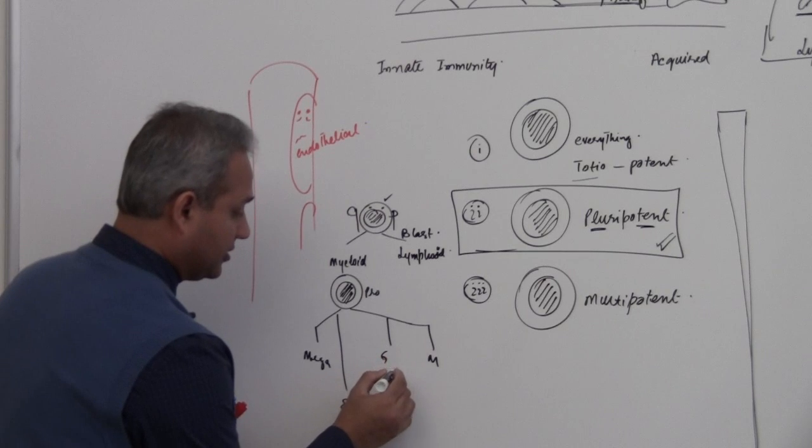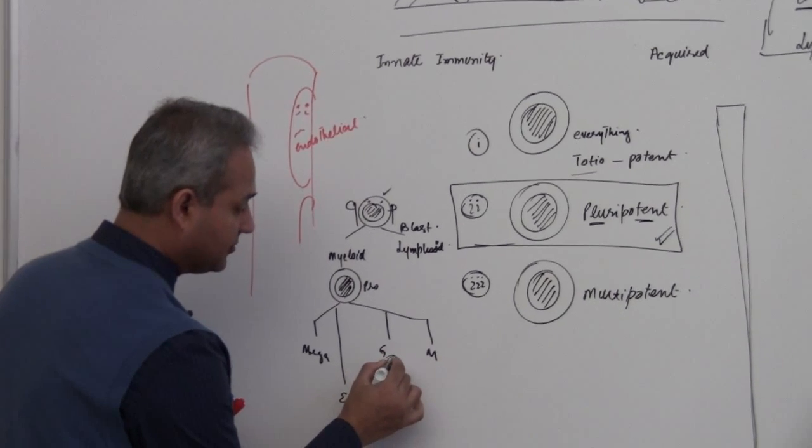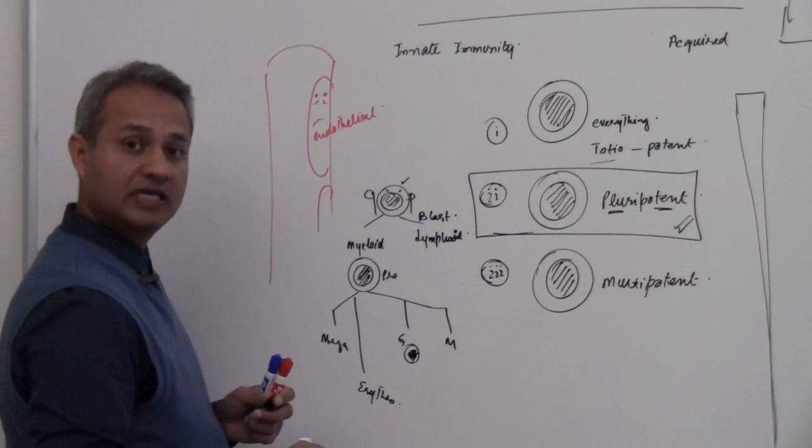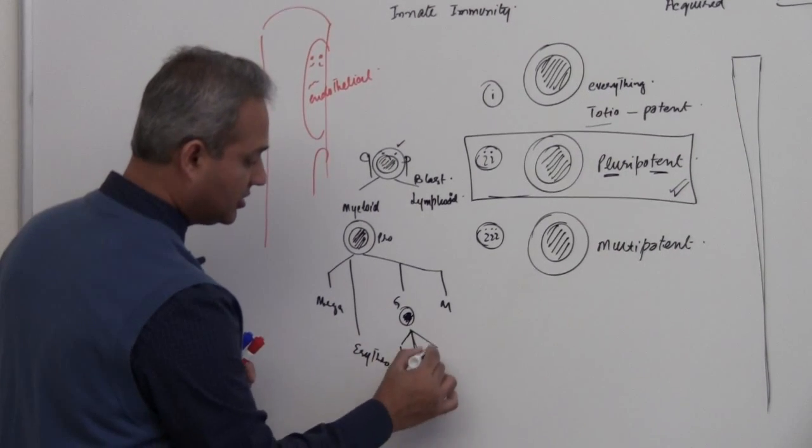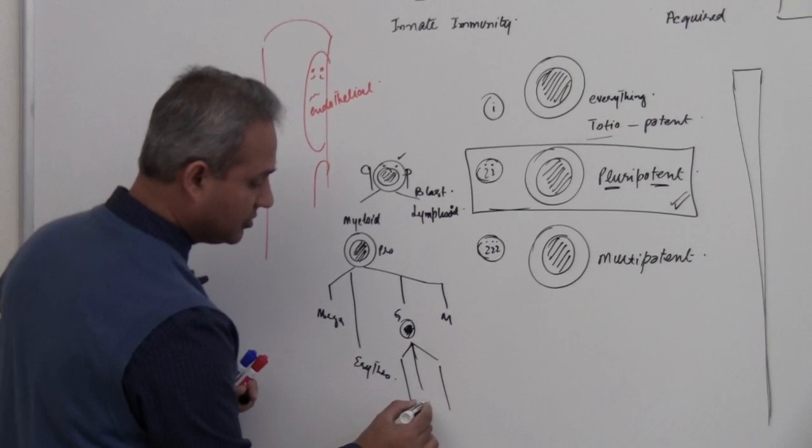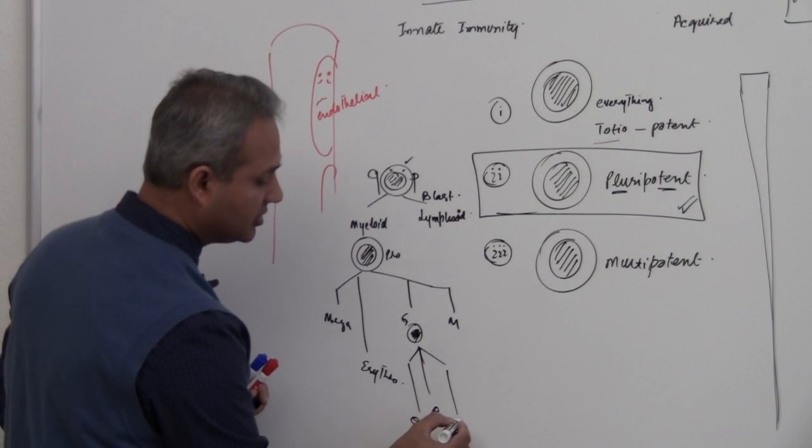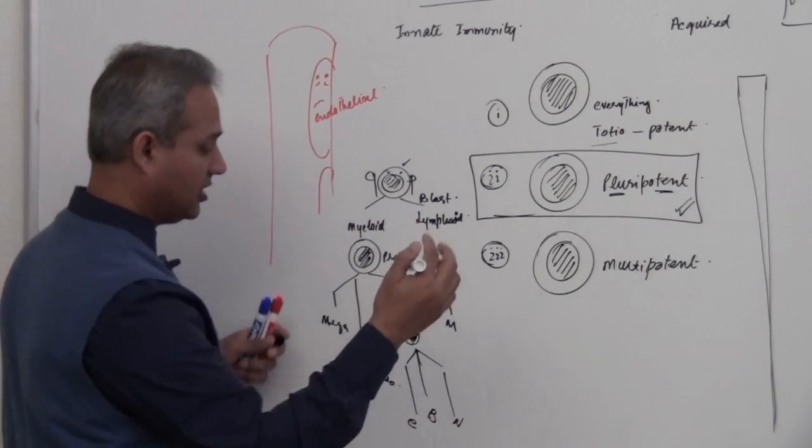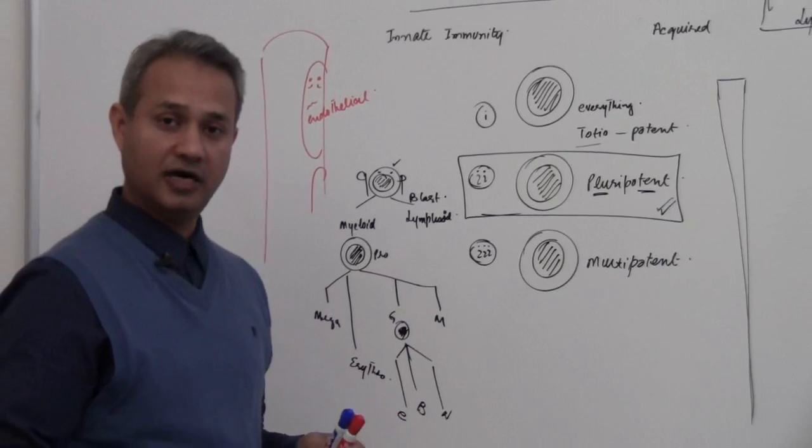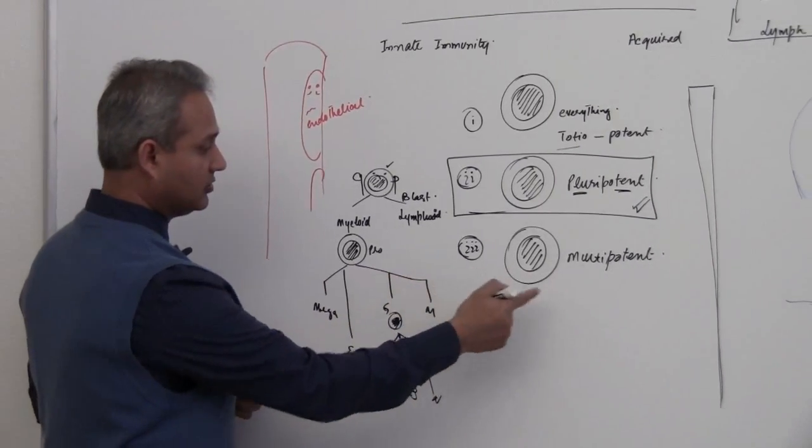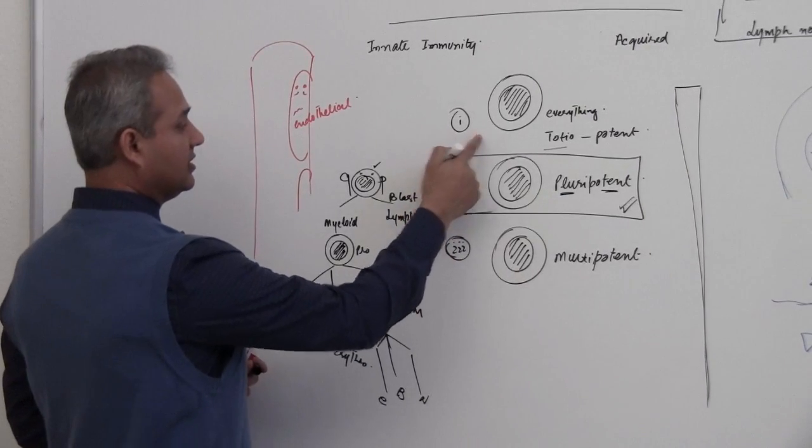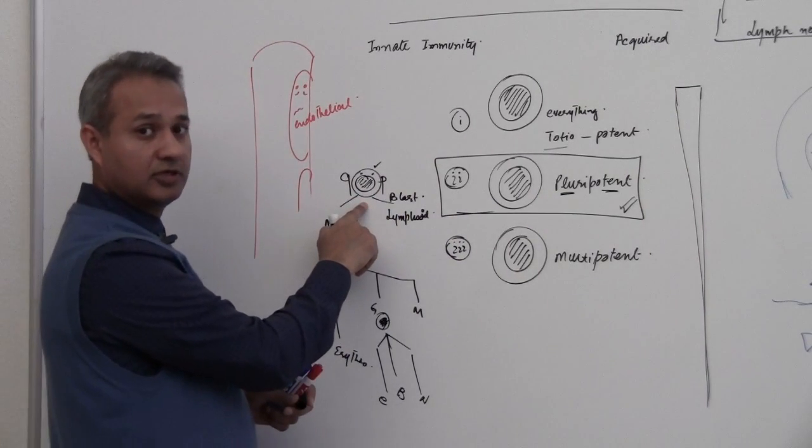Granulocytes here—this cell only gives rise to granulocytes, which are eosinophils, basophils, and neutrophils, our star today, our celebrity, the neutrophil. As we continue, if you see, this is not totipotent.